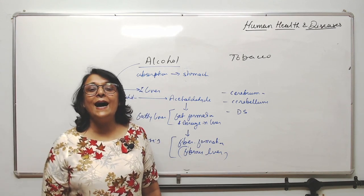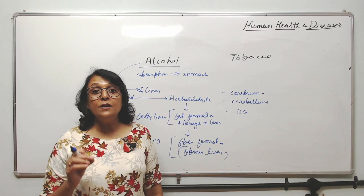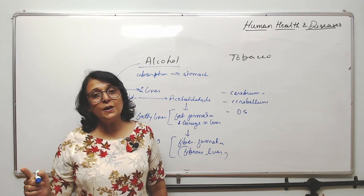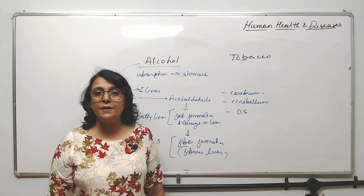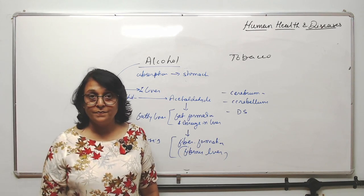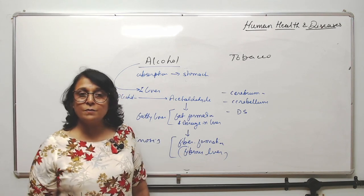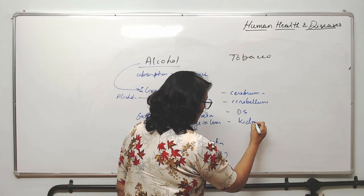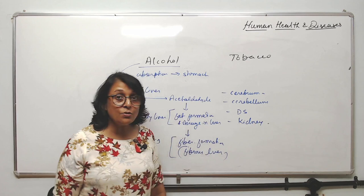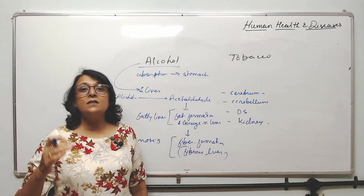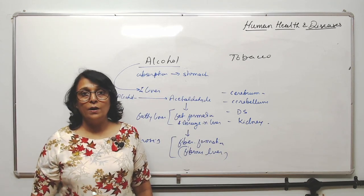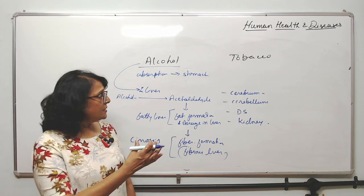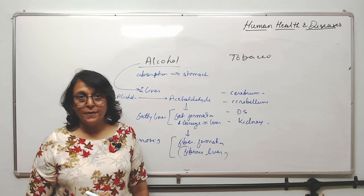Alcohol is a diuretic — it increases urine volume. If urine volume increases, the person may feel dehydrated and experience constipation. These are digestive system related problems. Additionally, because alcohol is a diuretic, it exerts an extra burden on the kidneys.